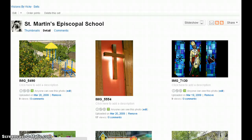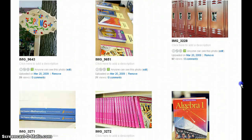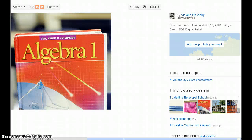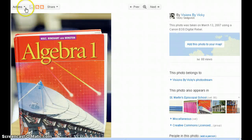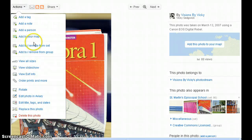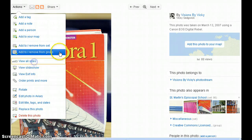So I'm going to go back here, and I'm going to pick the algebra book. I'll click on that image. Then up at the top here, there's something called actions. If you click on that, and then view all sizes, you'll see the image.